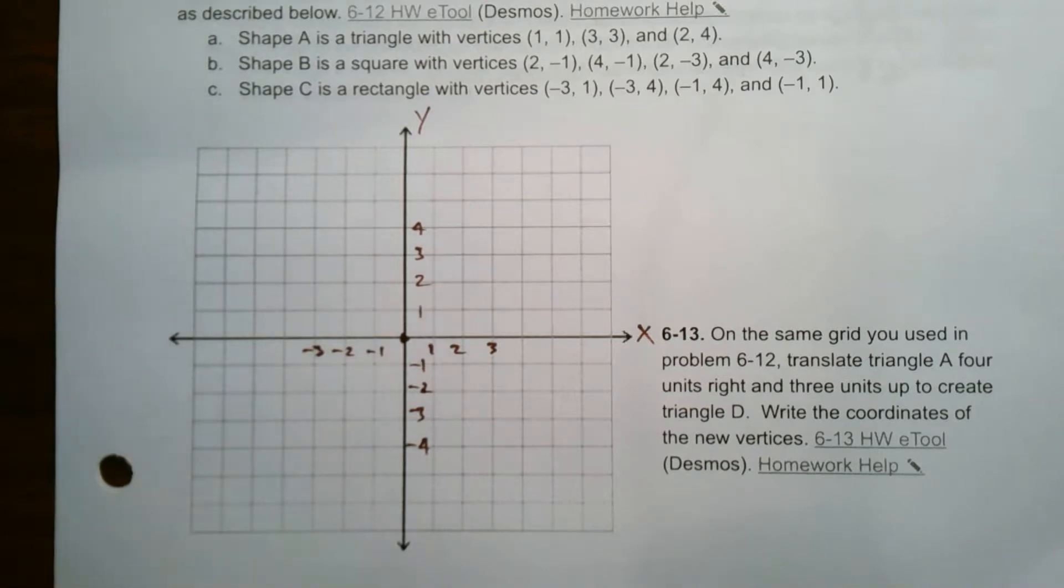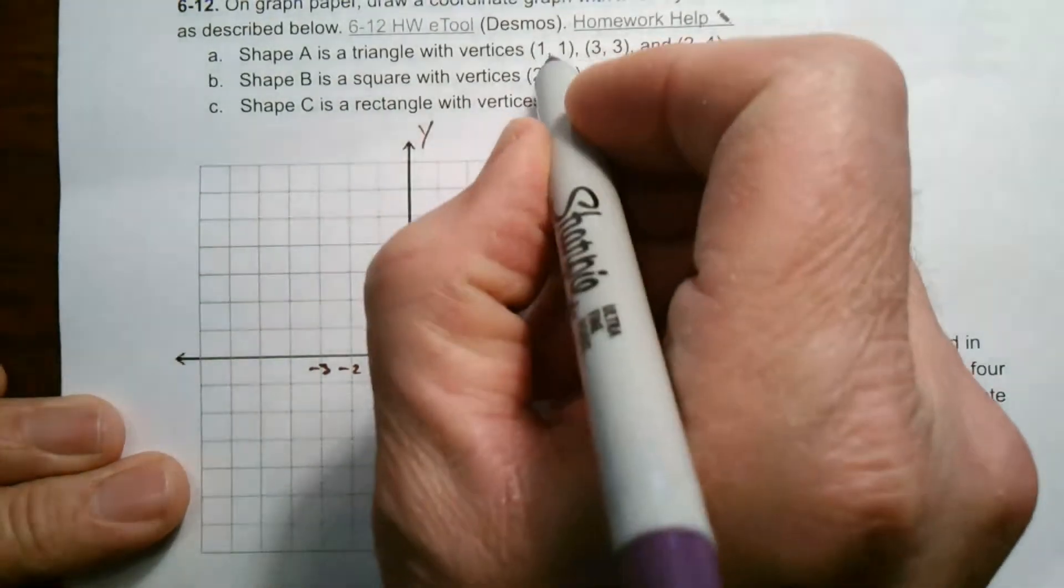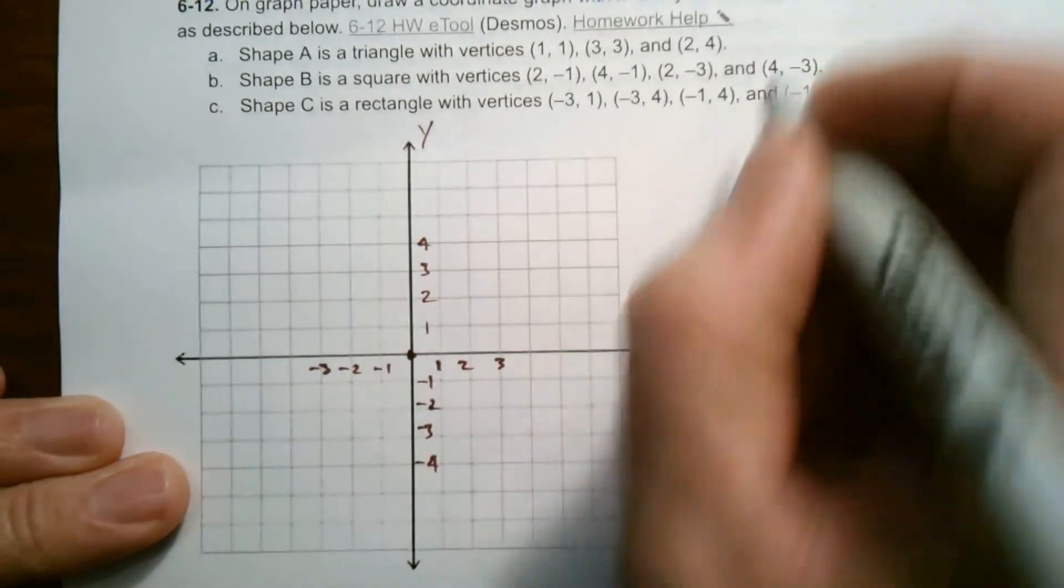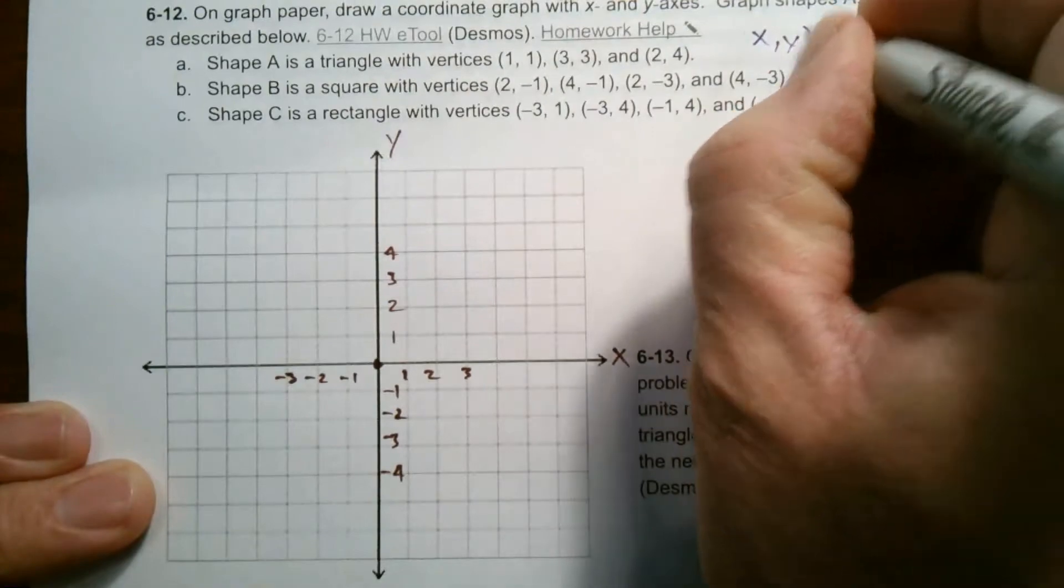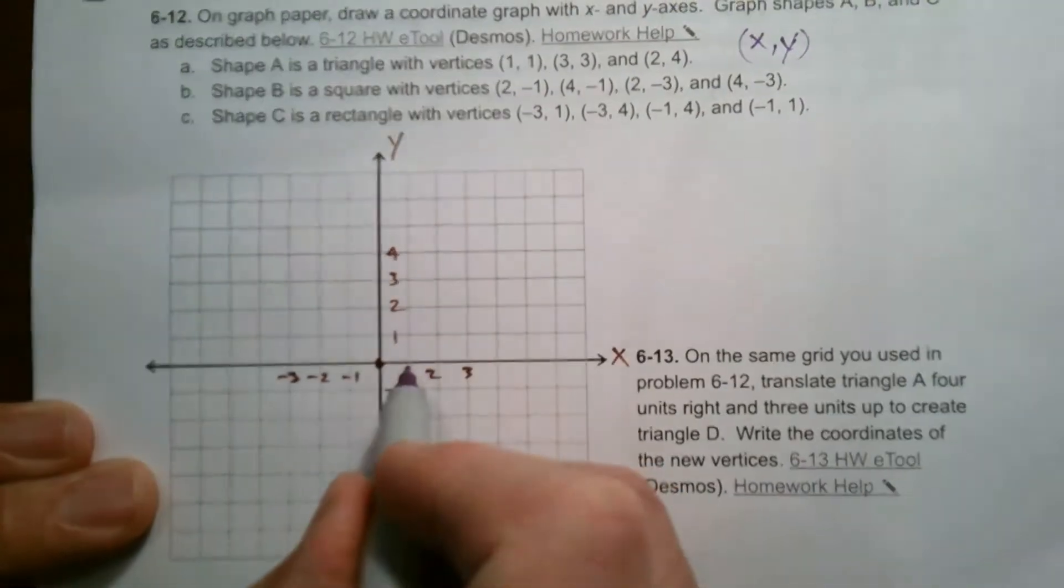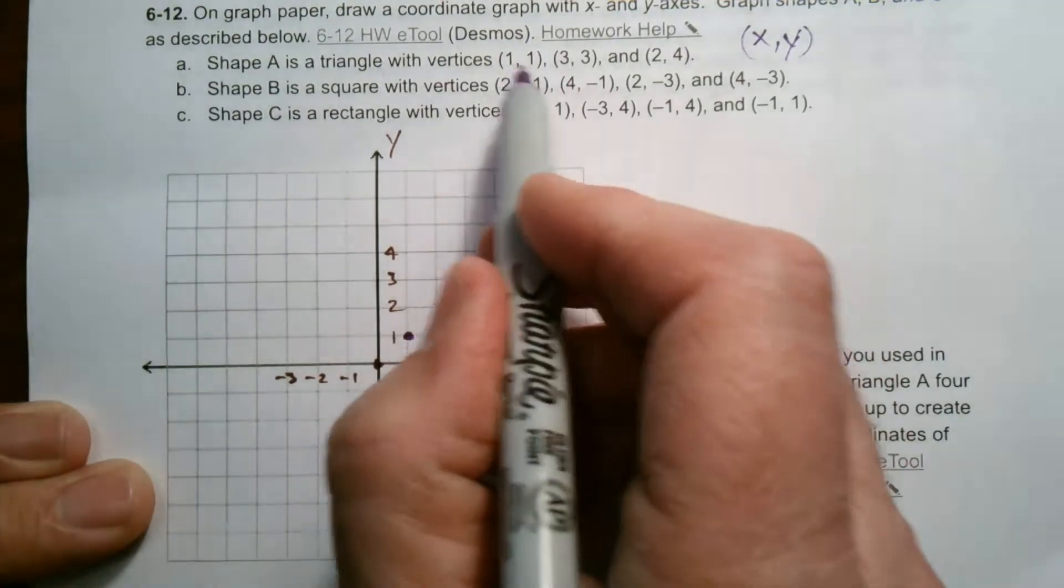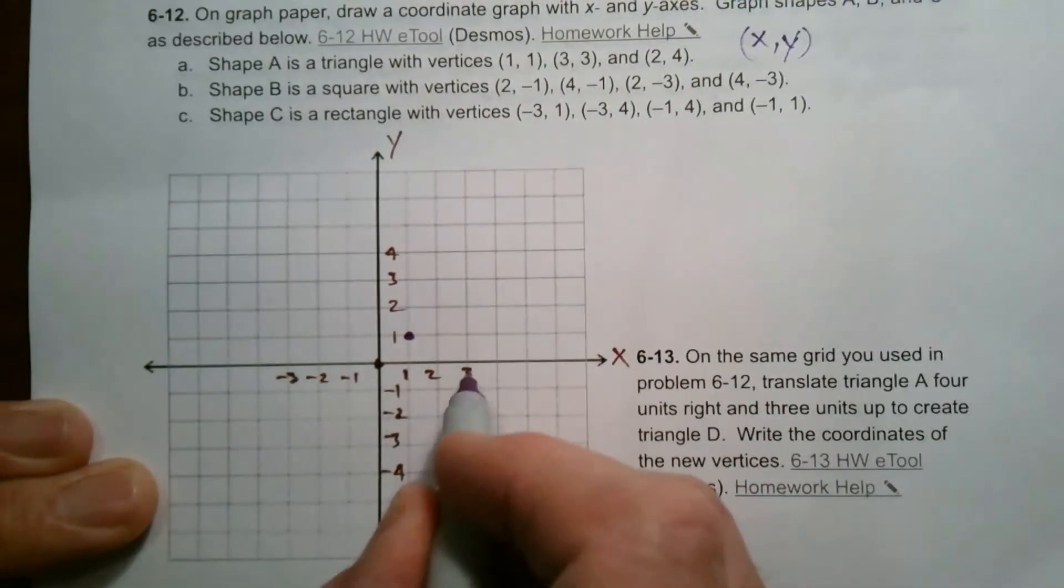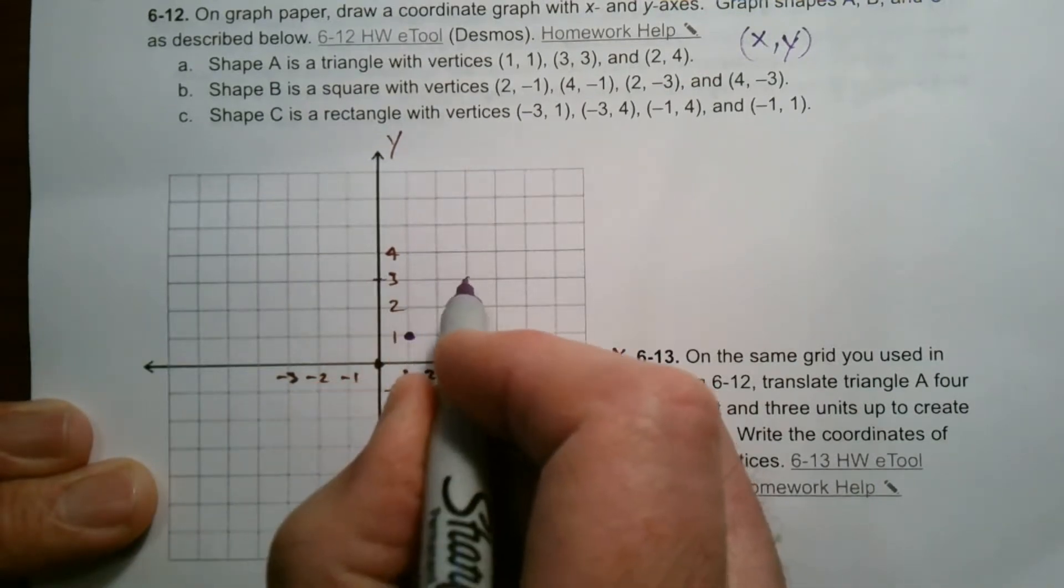So let's graph our first shape A. So shape A is a triangle with vertices one, one. So remember, your vertices always are coordinates, right? Coordinates are x comma y. Your x is first, then your y. So one, one would be at where x is one and y is one. So that right there is one, one. Then three, three is where the x is three, and the y is three. And those two connect there.